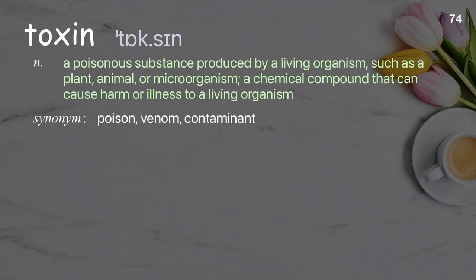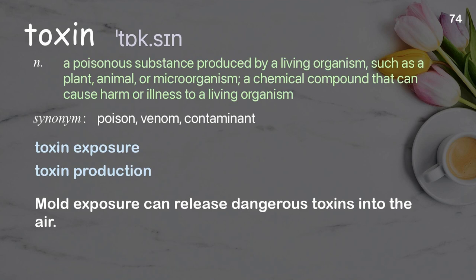Toxin: a poisonous substance produced by a living organism, such as a plant, animal, or microorganism; a chemical compound that can cause harm or illness to a living organism. Examples: Toxin exposure. Toxin production. Mold exposure can release dangerous toxins into the air.